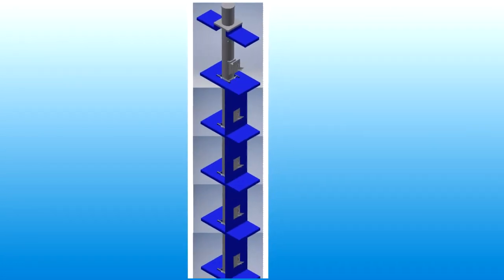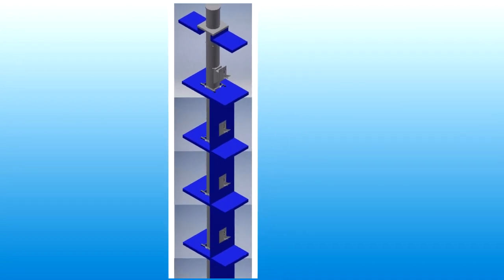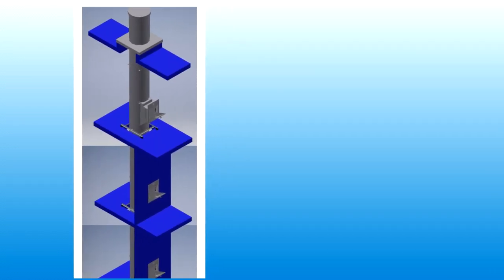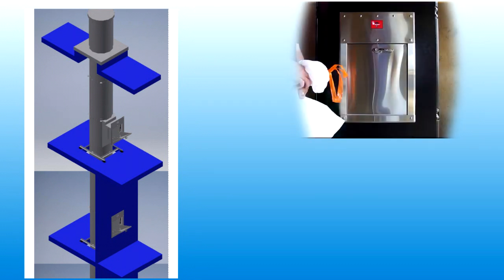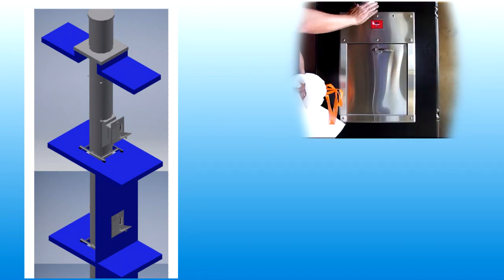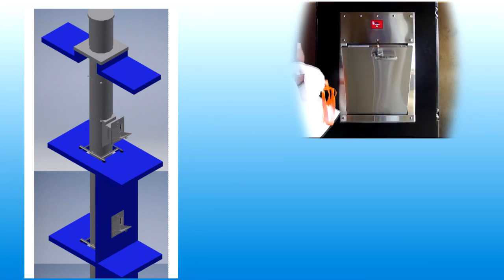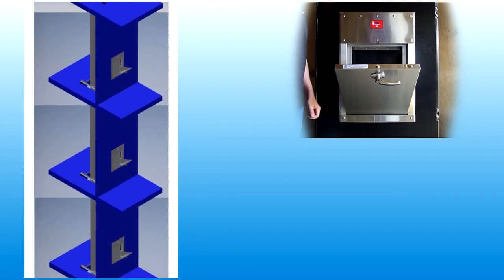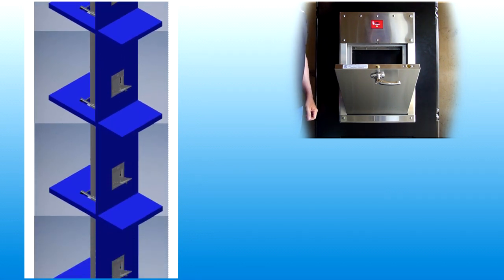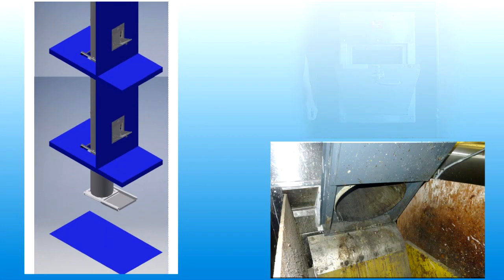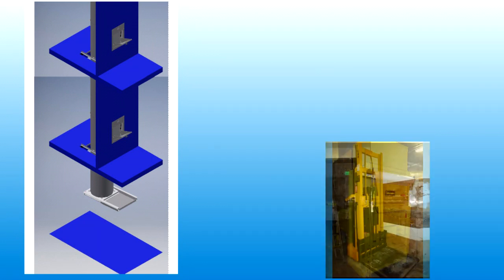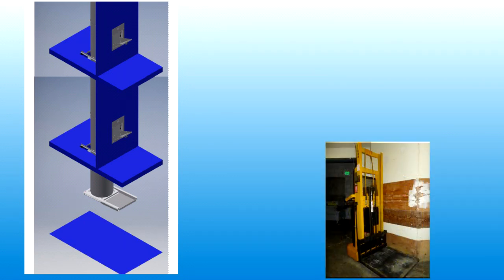The most basic form of a chute is a cylindrical pipe installed between each floor of a high-rise building. Access doors on each level allow materials to fall down through the chute to a collection point at the bottom. From here, additional equipment is used to remove the materials from the building.